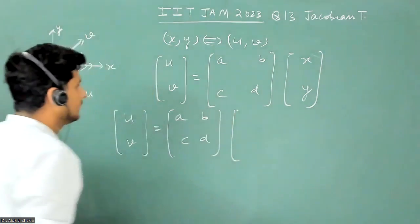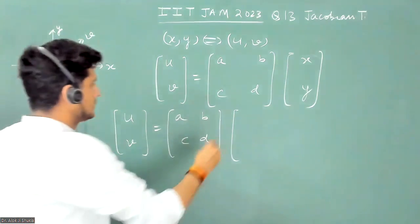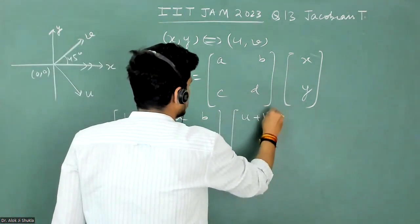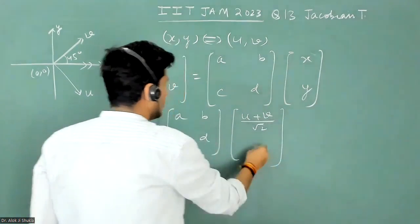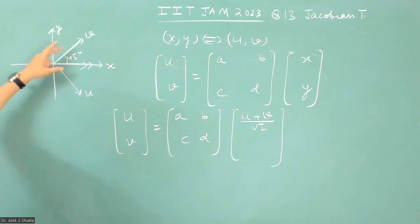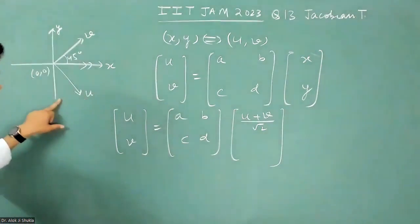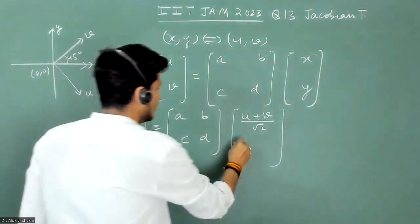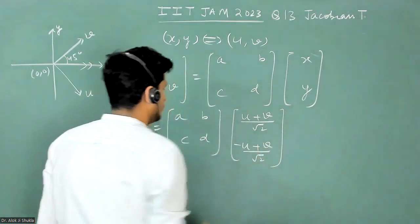And what you get here is x is just u plus v cos 45. One term is this. And then for y, it is u. So u will be negative and v will be positive. So it will be minus u plus v by under root two.